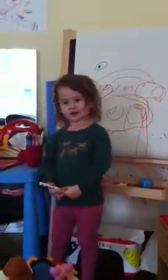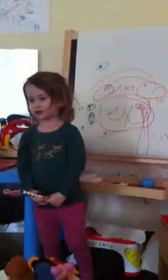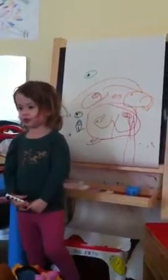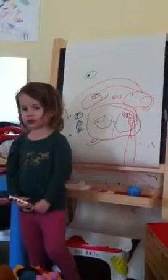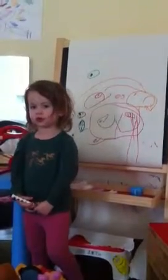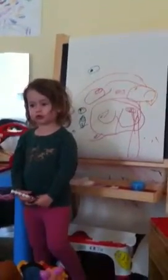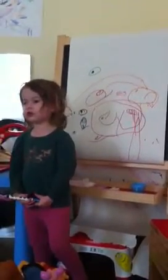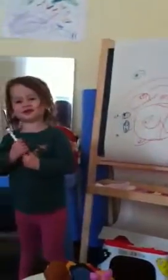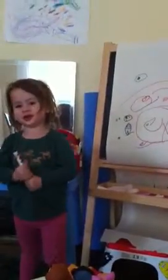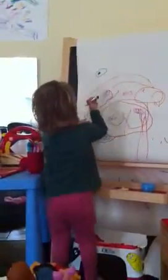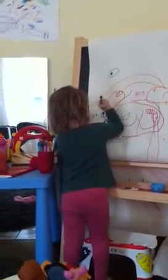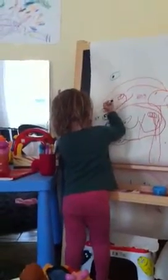Who else is there? Are there any other characters? How about the girl that Mowgli meets at the end? Yeah. You want to draw her? She's supposed to be round.